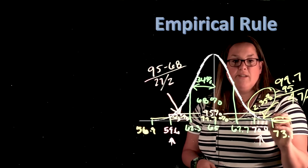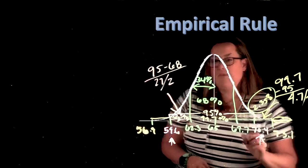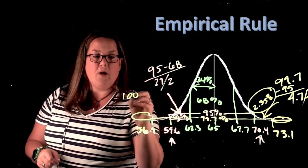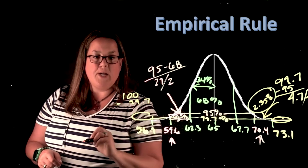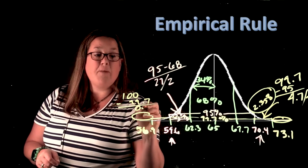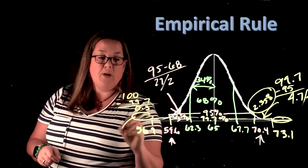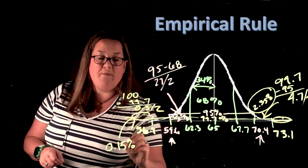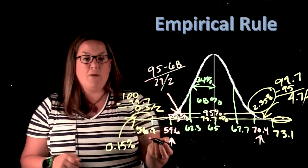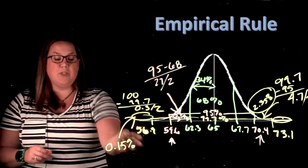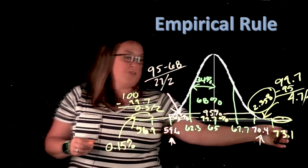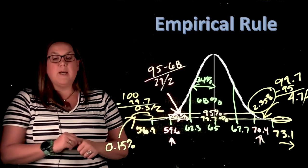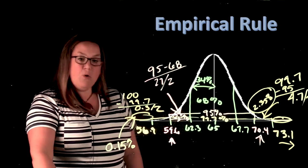You can also use the same logic to figure out what's in the tails. If the whole thing is 100% and I want to figure out the area in the tails, I take out what we already know, which is the 99.7%, and we're left with 0.3%. So in these tails, we have 0.3 divided by two, or 0.15%. So the percent of females who are less than 56.9 inches is only 0.15%, and the percent of females taller than 73.1 inches is 0.15%. That's the empirical rule.